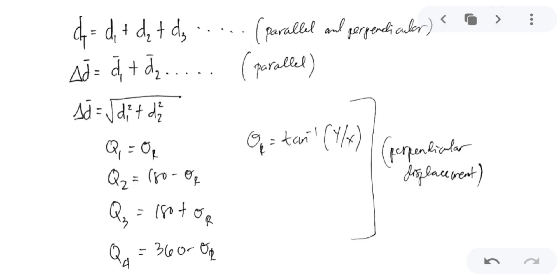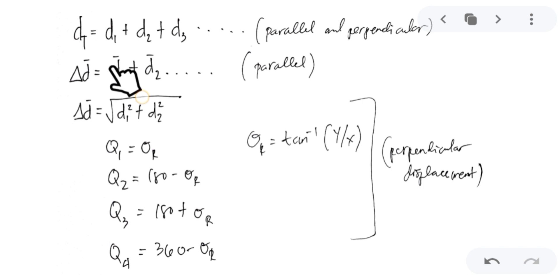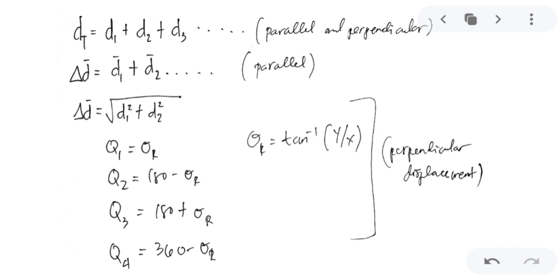For the formula, the symbol for distance is denoted by small d. To find the total distance, the symbol is D sub T (capital), equivalent to the sum of the individual distances. This applies to parallel and perpendicular vectors. For displacement, it is denoted by delta — a Greek letter denoting change — because this is change in position, and position can be measured through distance. When there is a bar on top, it means displacement, meaning there is direction. Without a bar, the focus is magnitude because it is a scalar quantity.